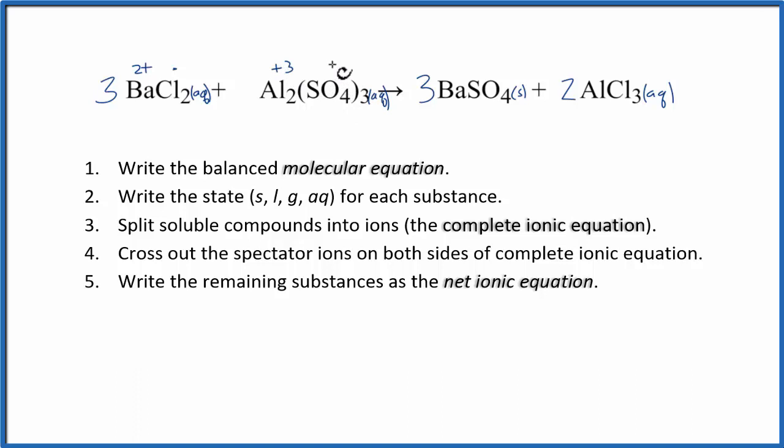On the product side here, the barium sulfate, that's a solid, so it's not going to dissolve, so we don't worry about splitting it into its ions. Aluminum is three plus and the chlorine has a one minus charge. Now we can split these into their ions to write the complete ionic equation.